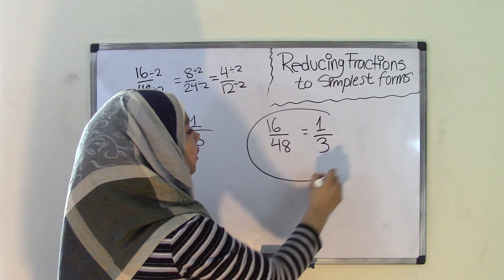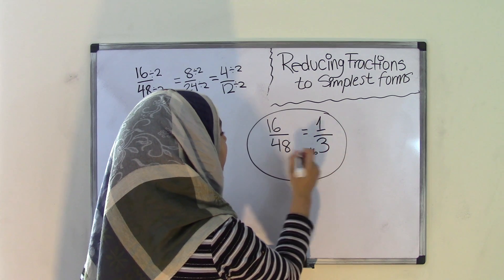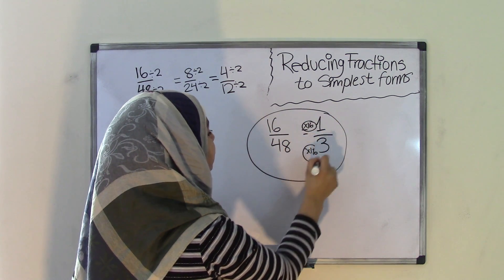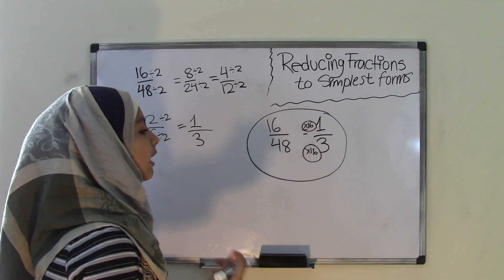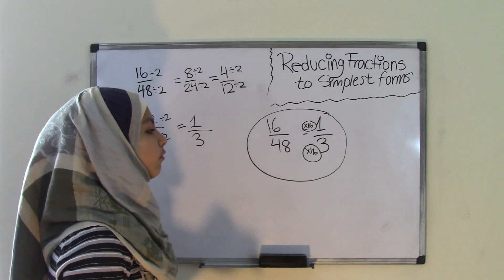So both of these fractions are equivalent fractions because 3 times 16 can give us 48 and 1 times 16 can give us 16, right? So both of these are equivalent fractions and now we know the simplest form for the fraction 16 over 48.